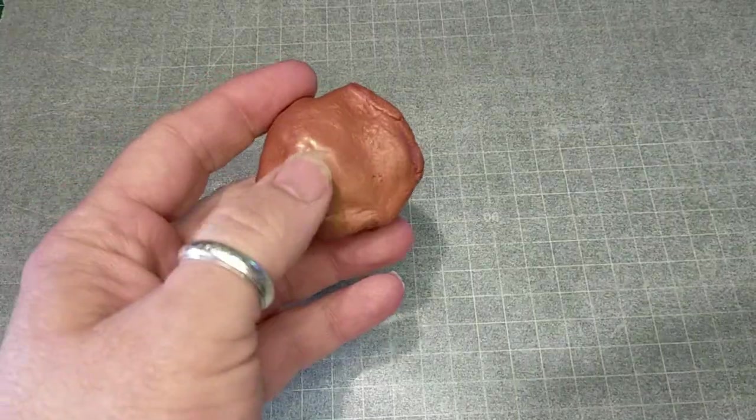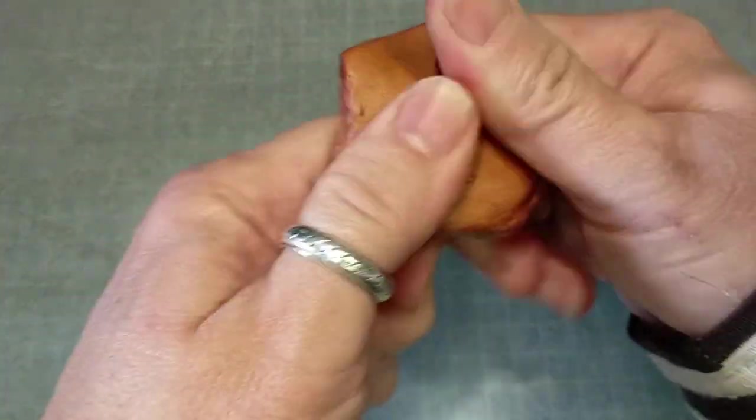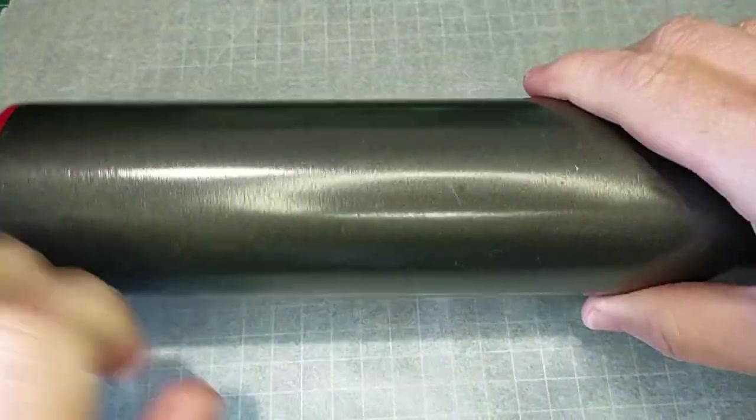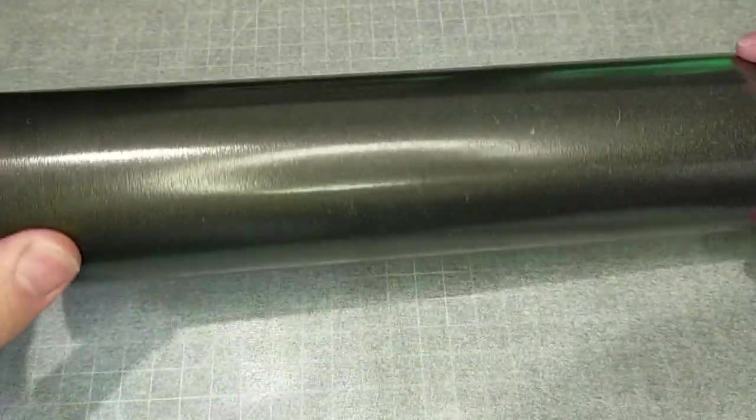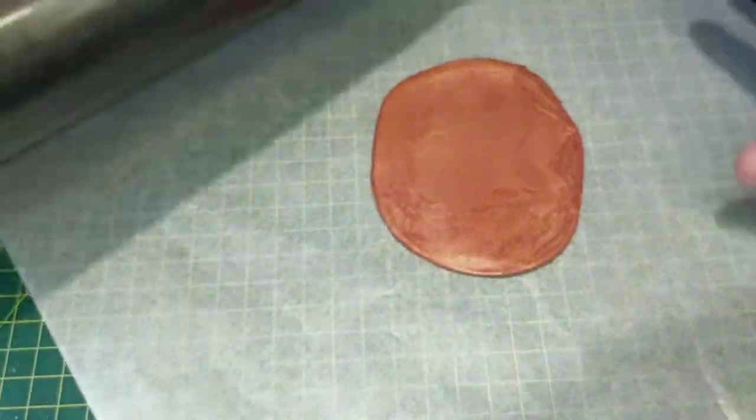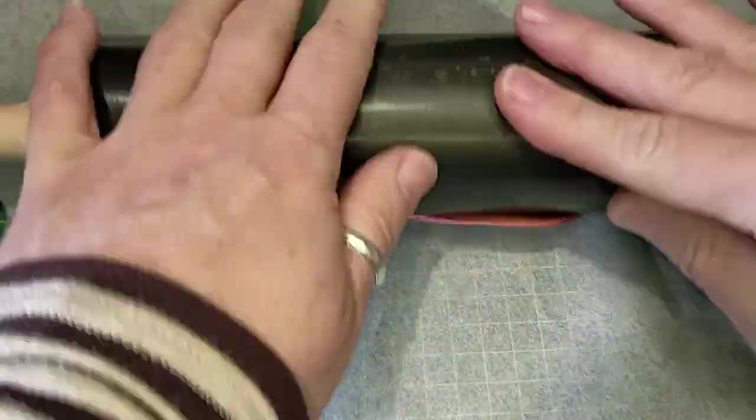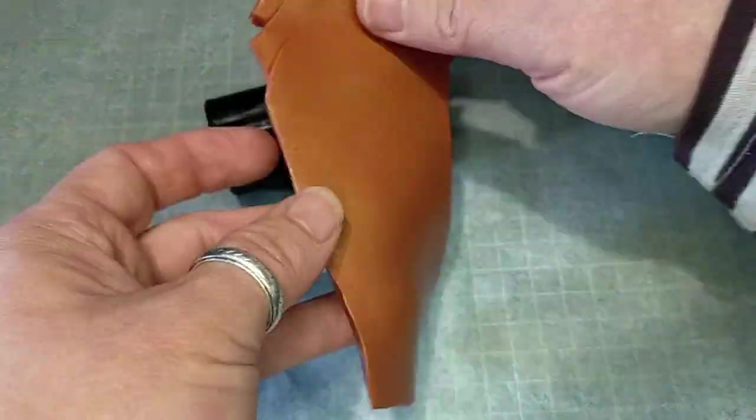I started out with this little project using some polymer clay. It doesn't matter what color it is, you just want the clay for the purpose of making an impression. I rolled it out fairly thin, just so I could get enough to go around the little piece of plastic.